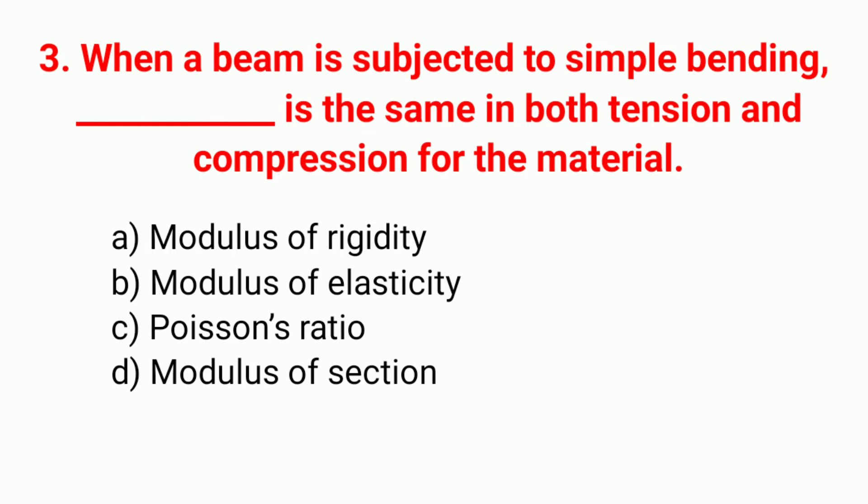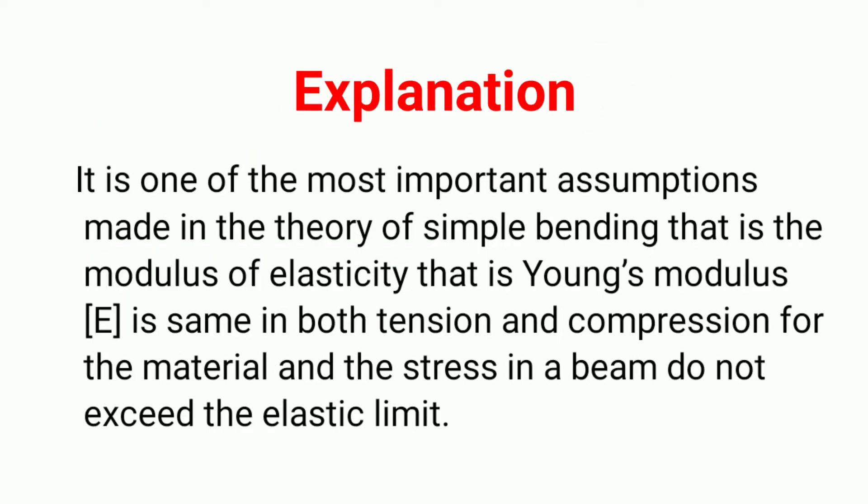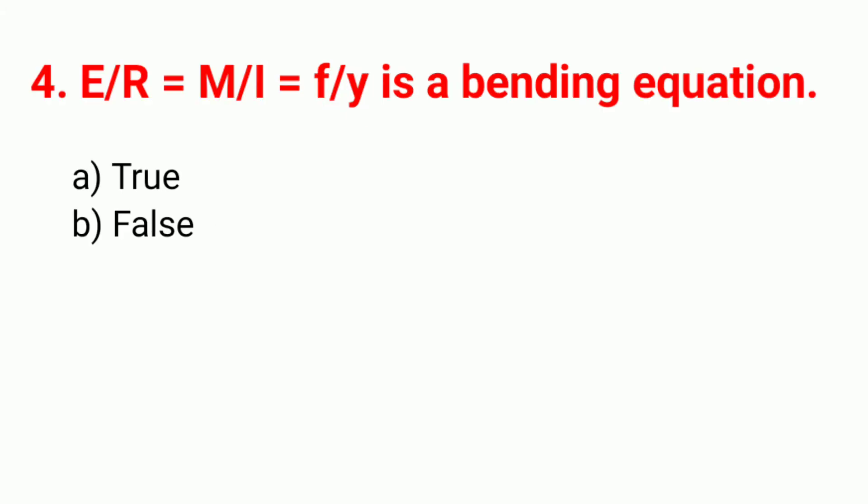Question 3: When a beam is subjected to simple bending, dash is the same in both tension and compression for the material. The correct answer is option B. Explanation: this is one of the most important assumptions in the theory of simple bending — the modulus of elasticity, that is Young's modulus E, is the same in both tension and compression for the material.